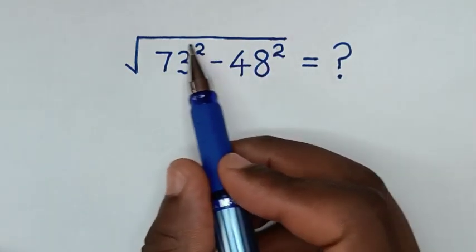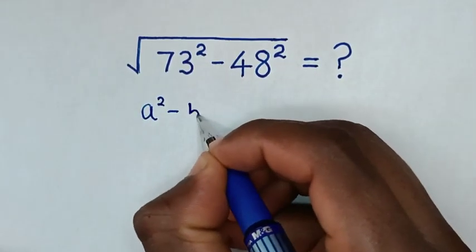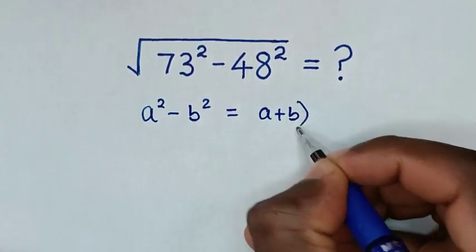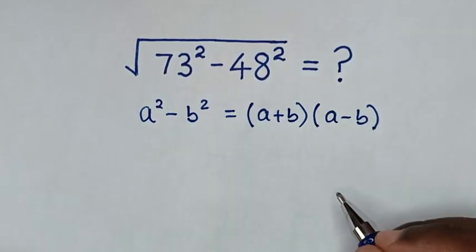First, from this expression under square root is in the form of a square minus b square is equal to a plus b bracket, a minus b bracket.